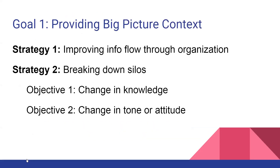From strategic leadership, the goal we chose was providing big-picture content. We chose this before talking to our staff — based on feedback from a staff survey the previous year, when staff told us they didn't know all that was going on and wanted to know more. The strategies were improving information flow through the organization and breaking down organizational silos, with specific objectives to go along with those strategies.